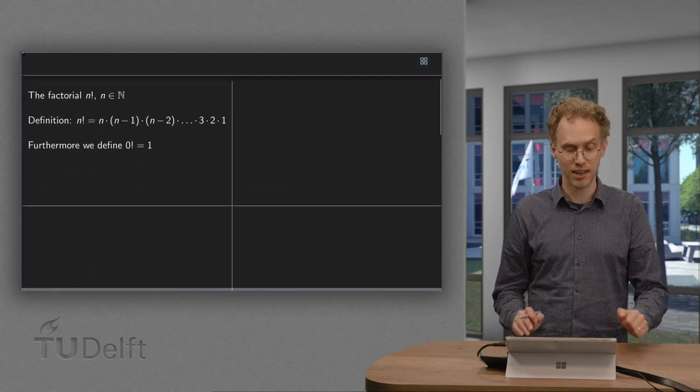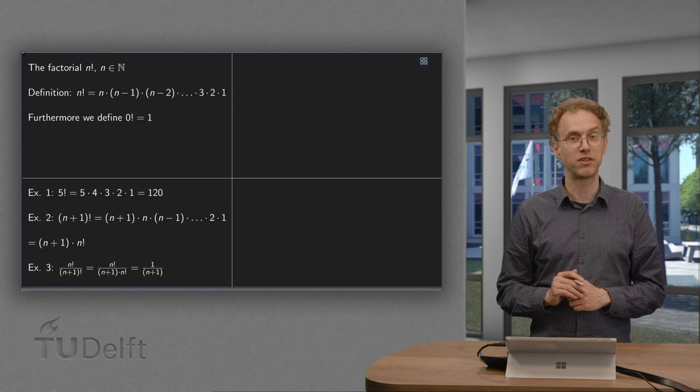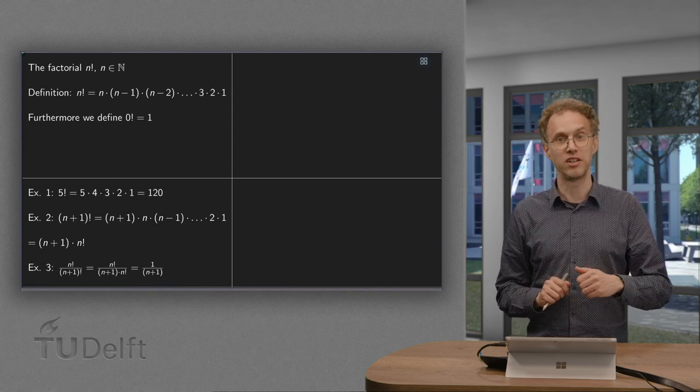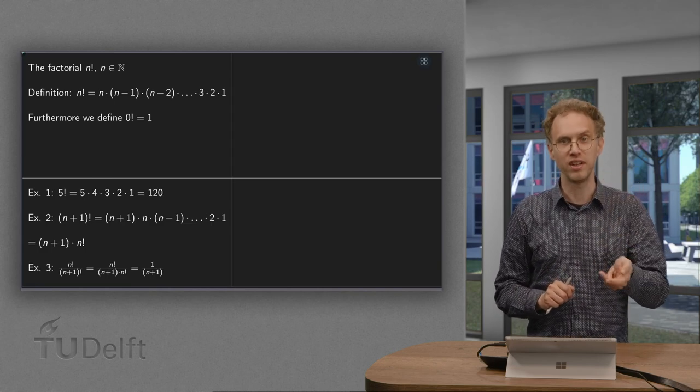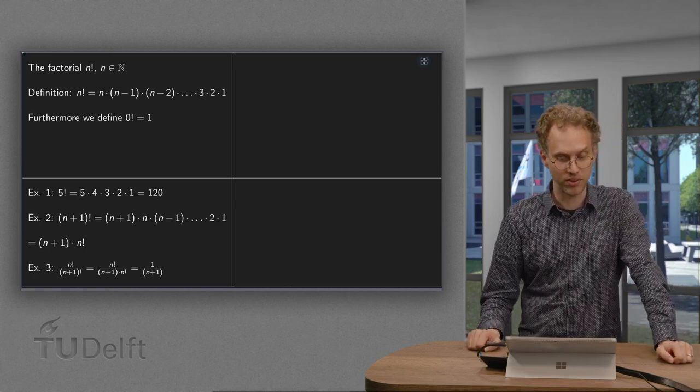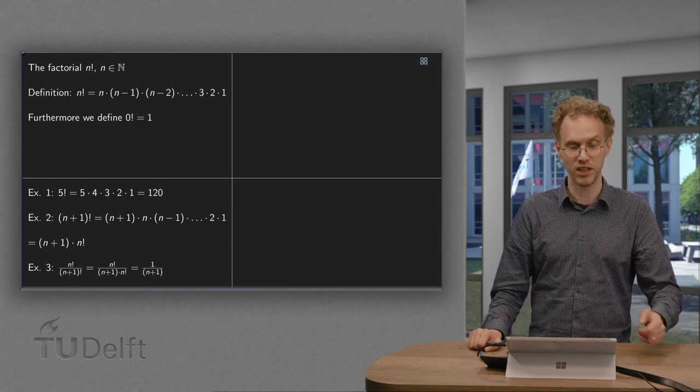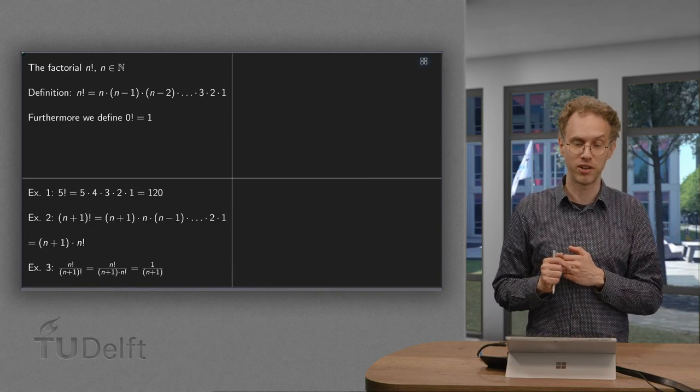So that is the definition. Let us do some examples. So 5 factorial, how do we compute this? That is 5 times 4 times 3 times 2 times 1. 5 times 4 equals 20 times 3 equals 60 times 2 equals 120 times 1, remains 120. So 5 factorial equals 120.